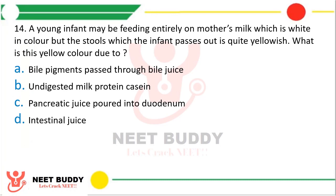Question 14. A young infant may be feeding entirely on mother's milk which is white in color, but the stool which the infant passes out is quite yellowish. What is this yellow color due to? Options: bile pigment passed through bile juice, undigested milk casein, pancreatic juice poured into duodenum, or intestinal juice. The correct answer is option a — the bile pigments that are passed through the bile juice.